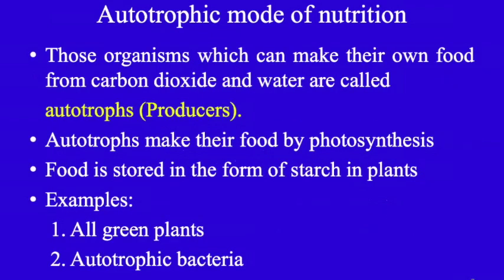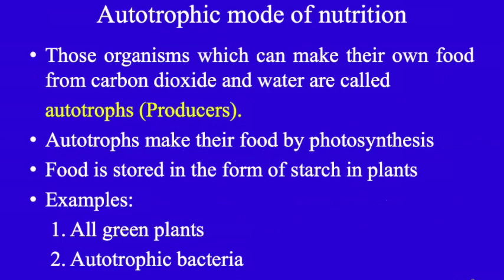Those organisms which can make their own food from carbon dioxide and water are called autotrophs. They are also called producers. Autotrophs make their own food by photosynthesis. Food is stored in the form of starch in plants. Examples are all green plants and autotrophic bacteria.